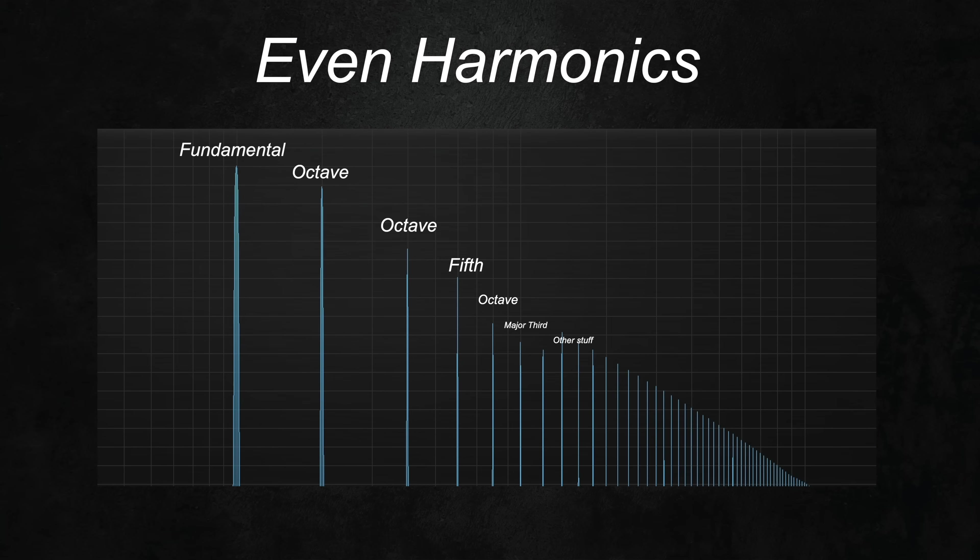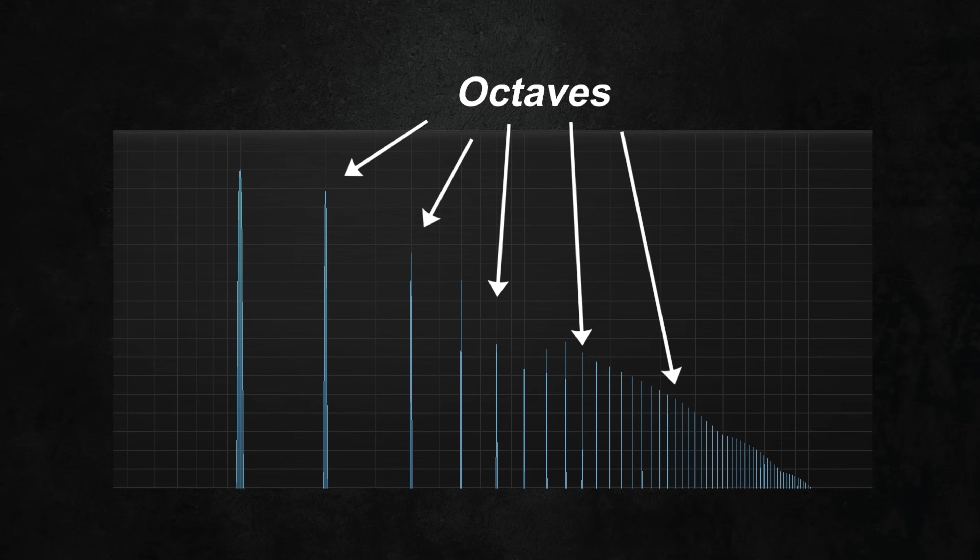That's because as we saw in the first video of this series, even harmonics are at less dissonant musical intervals, but also all of the harmonics that are octaves are even harmonics, which can cause a sort of effect where a sound opens up and asserts its pitch more clearly.